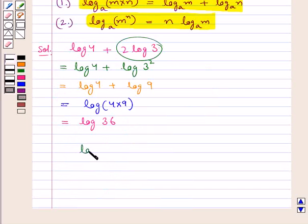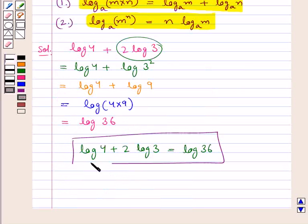Thus, we can write log 4 plus 2 log 3 as log 36. This is our final answer. This completes the session. Hope you have understood the solution of this question.